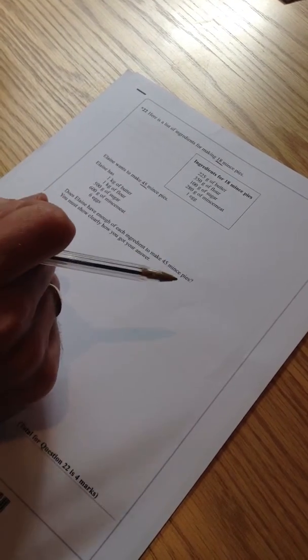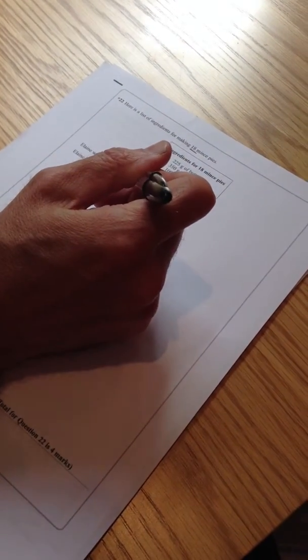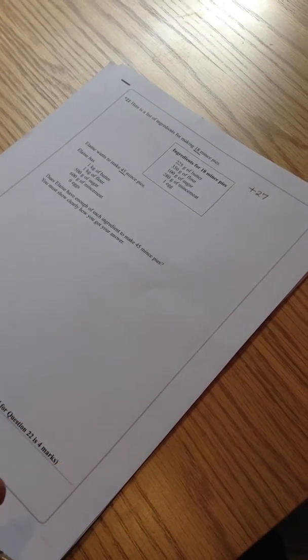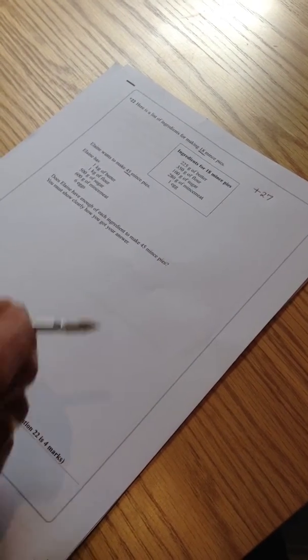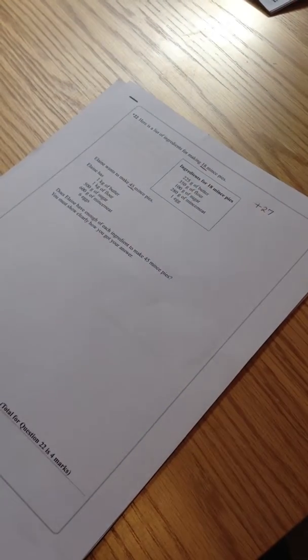Okay. Well, some of you might be thinking, okay, if she's gone from 18 mince pies to 45 mince pies, that is 27 more mince pies. So you might be thinking, well, I'll just add 27 to every ingredient that she's got that we need for 18.